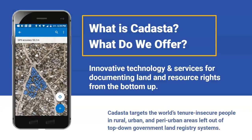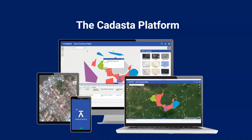We target the world's tenured insecure people in rural, urban, and peri-urban areas left out of top-down government land registry systems. Recognizing that every partner is unique, our tools and services can accommodate a wide range of technical capabilities and resources and can be applied to a variety of different sectors. CADASTA offers an open and flexible suite of mobile and web-based tools designed to help users collect, manage, and store land and resource rights, built on the principles of open standards and access and supported by ESRI ArcGIS technology.